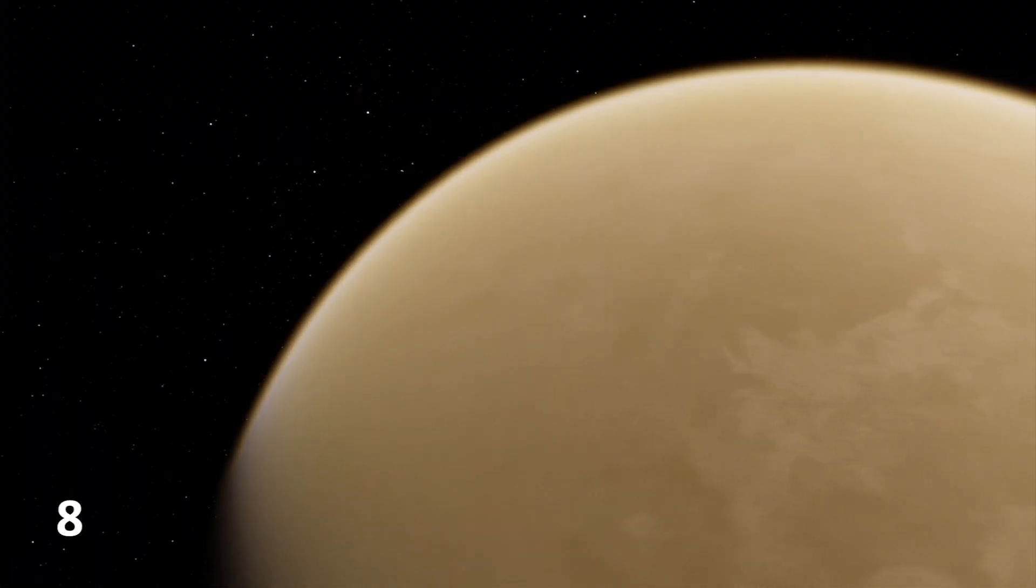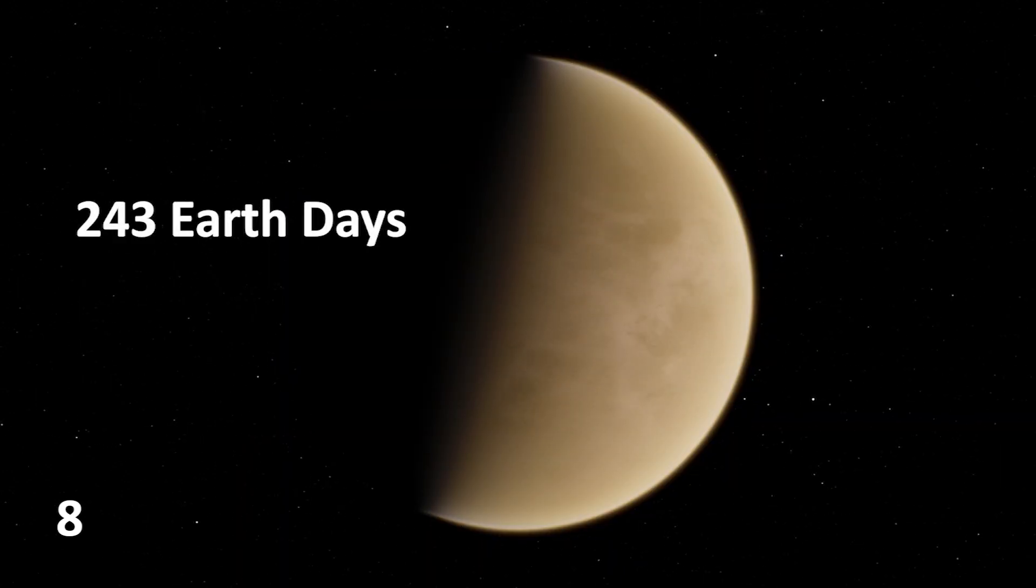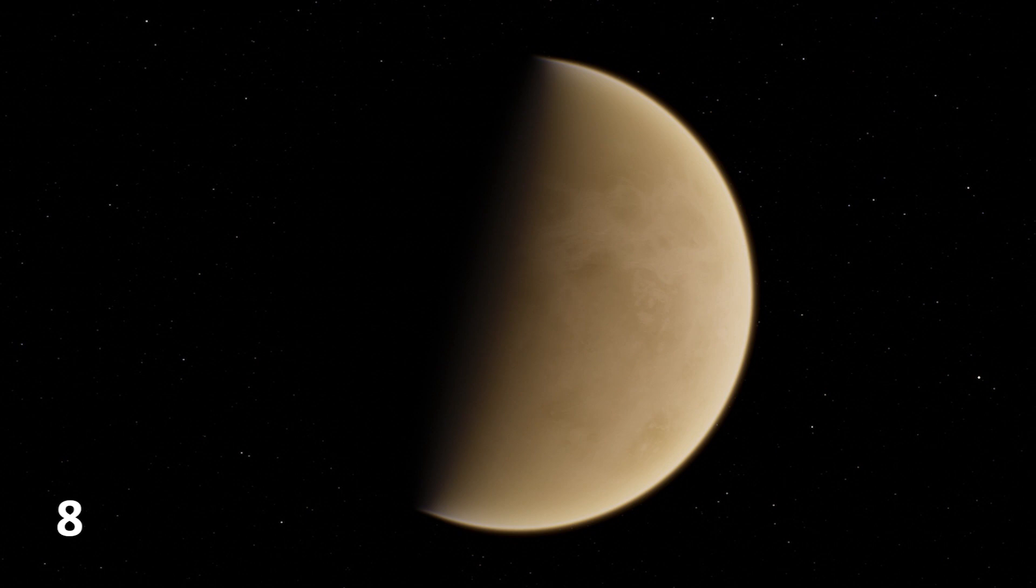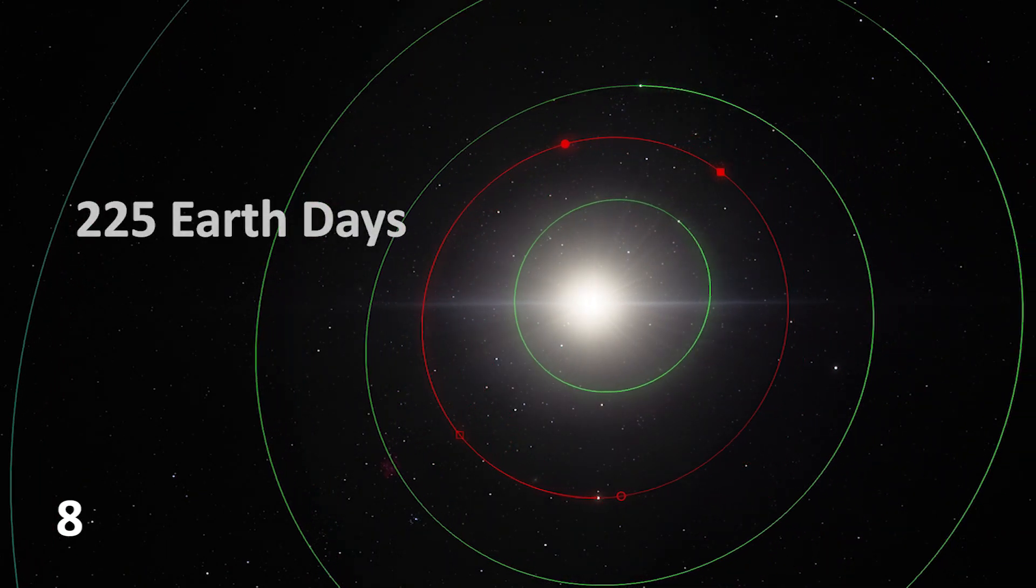A day on Venus is longer than a year on Venus, taking it 243 Earth days to do a full rotation on its axis, but only 225 Earth days to do an orbit of the Sun.